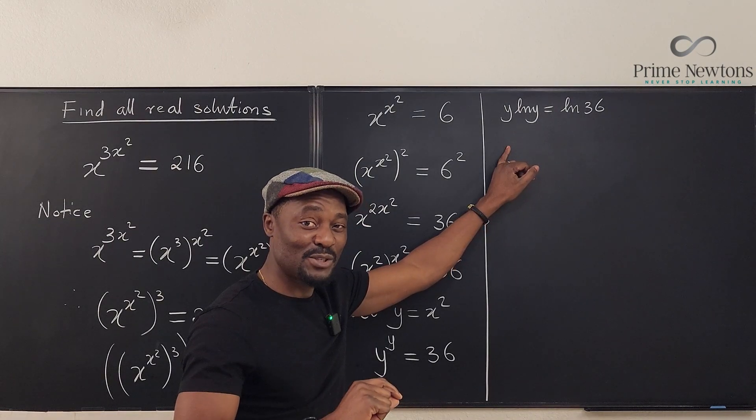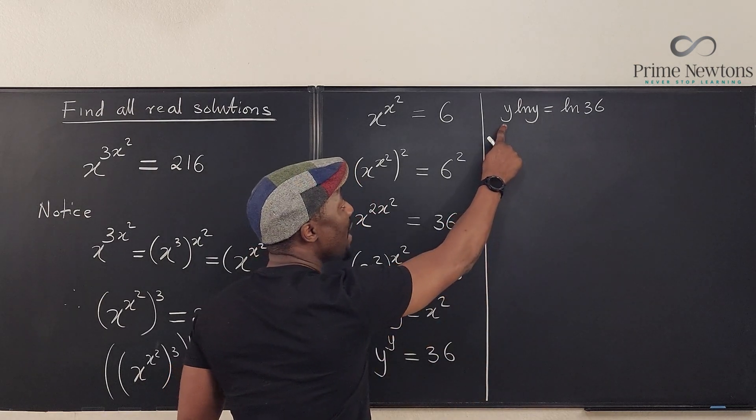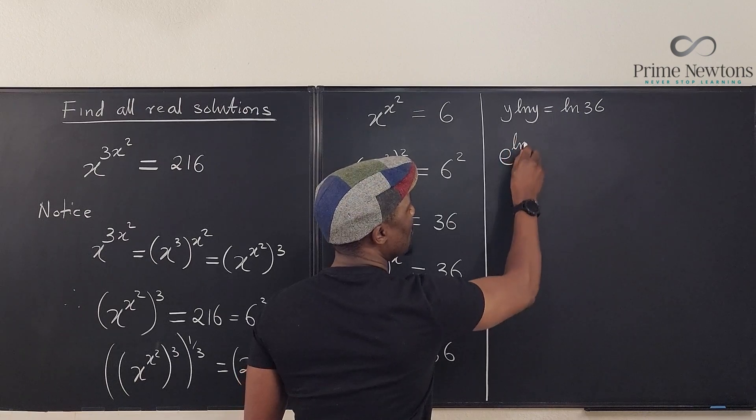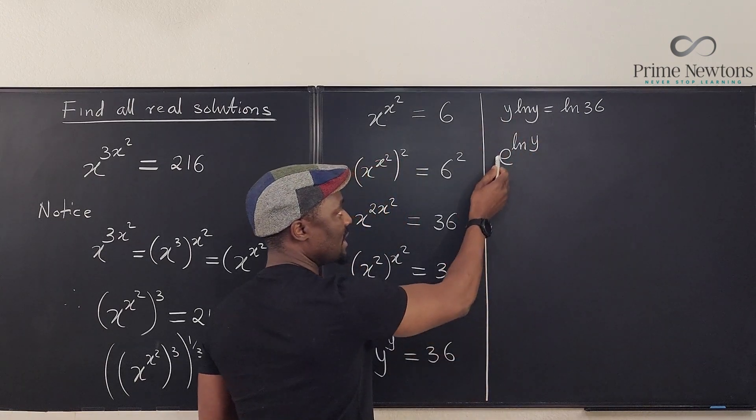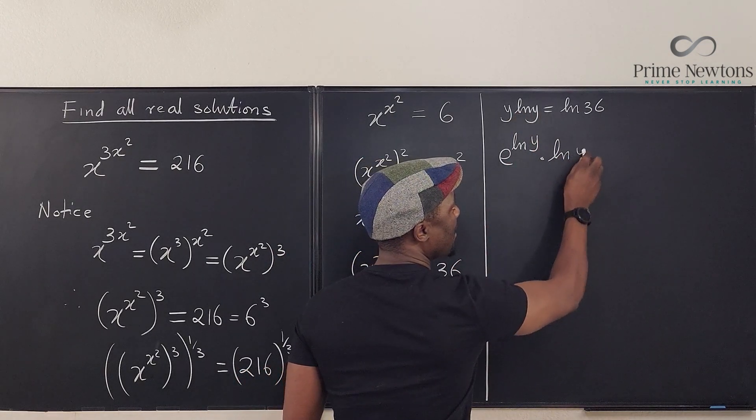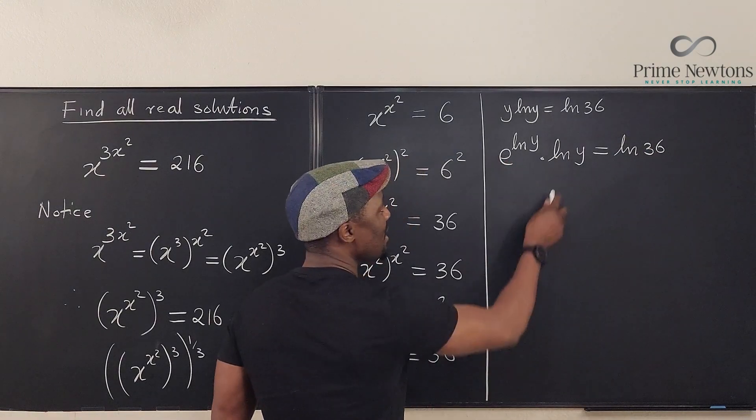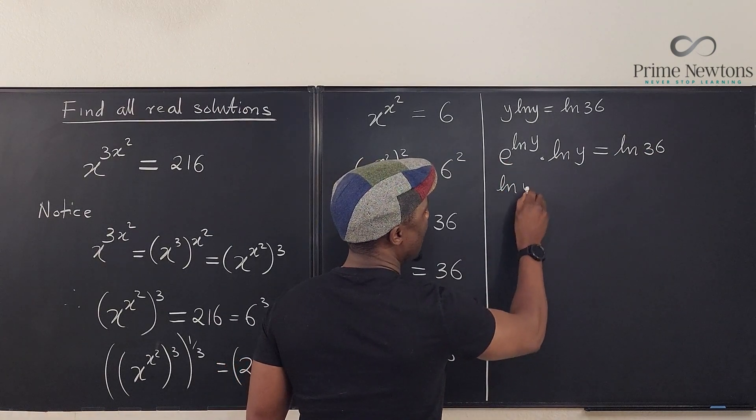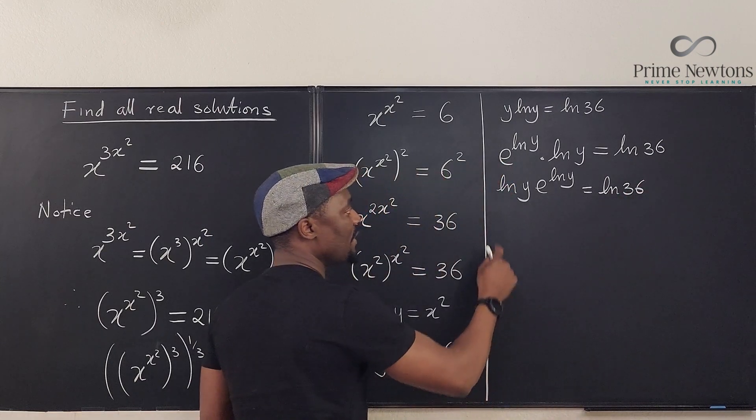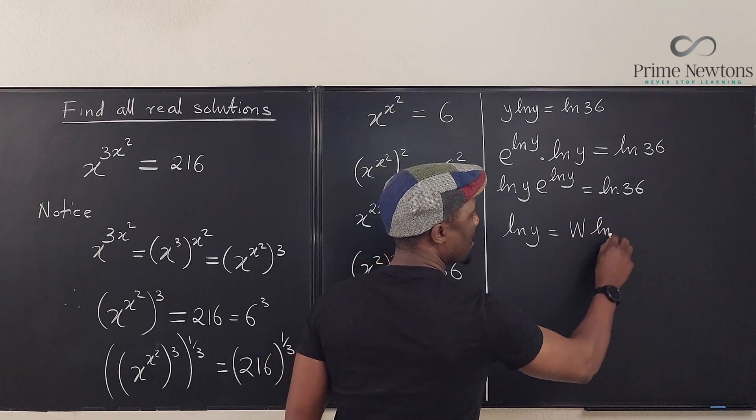So it means we have to write this in terms of e. So if we write this in terms of e, it's going to be e to the natural log of y. That's what y is because e is going to cancel this out, but we still have to multiply by the natural log of y. And that answer is going to be natural log of 36. So here we can write this as ln of y, e to the ln of y equals ln 36. So we know if we take the w of both sides, we're just going to have natural log of y equals the w of ln of 36.